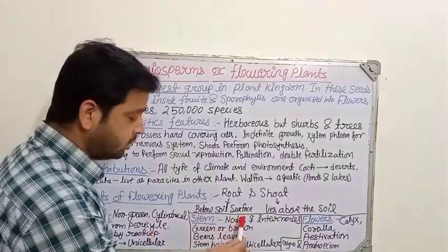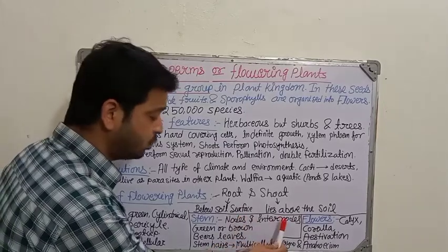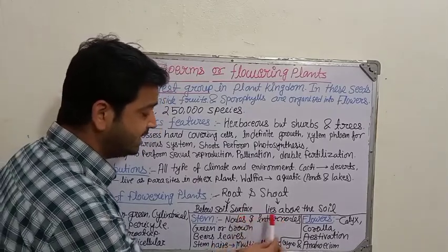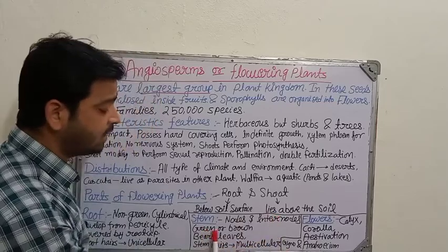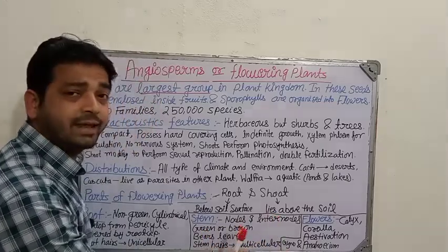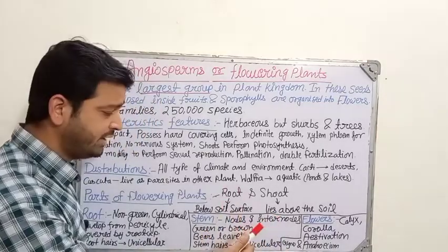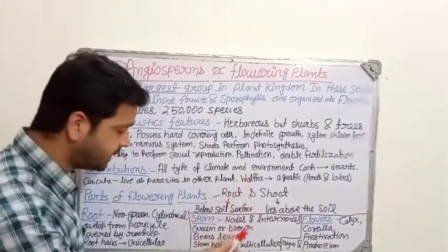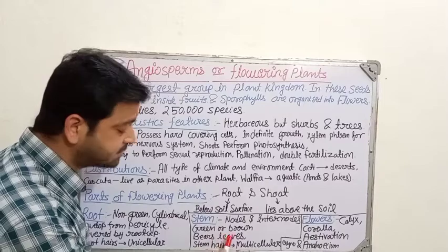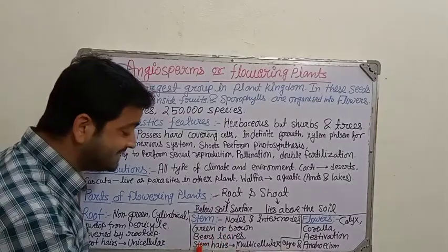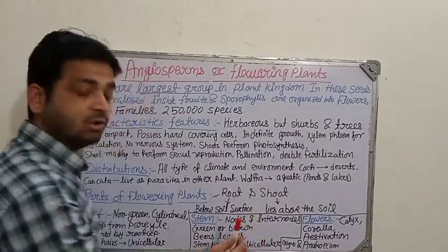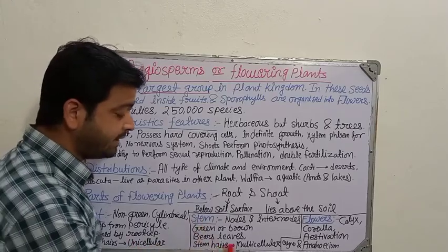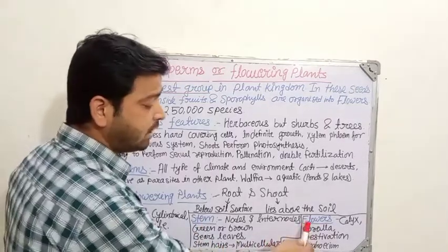Coming to the stem of the flowering plant — stems have nodes and internodes; we can differentiate into nodes and internodes. They are green in color, or sometimes brown when they are mature enough, as we can see even in the mango tree. Stems bear leaves, and stem hairs are multicellular — not unicellular. Root hairs are unicellular, whereas stem hairs are multicellular.